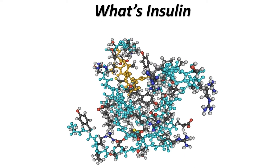What's insulin? Insulin is a hormone which helps sugar enter the cells to be used as energy, and without insulin, too much sugar collects in your blood.